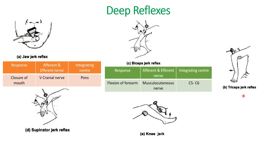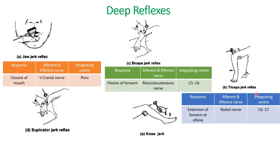The next one is the tricep jerk reflex. With a reflex hammer, we'll strike the tricep tendon at the indicated position. Due to this strike, extension of the forearm at the elbow occurs.